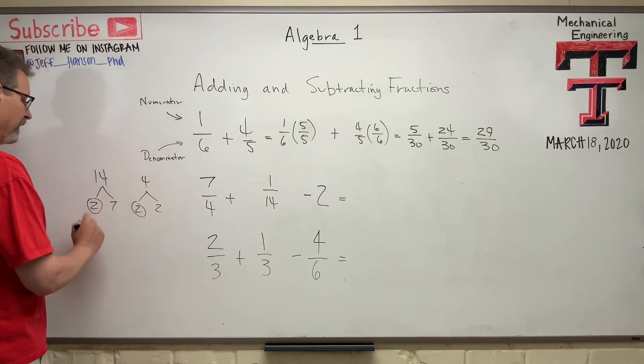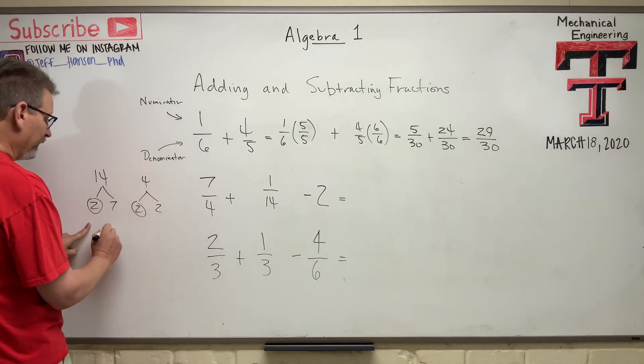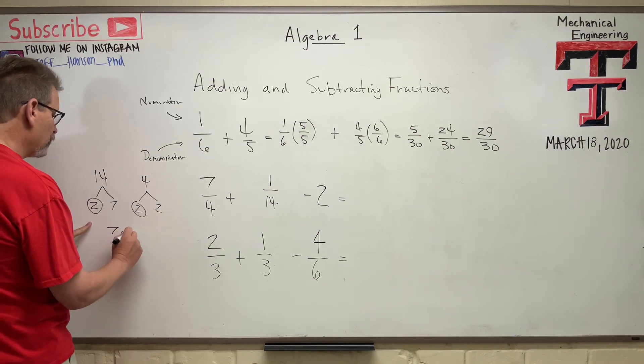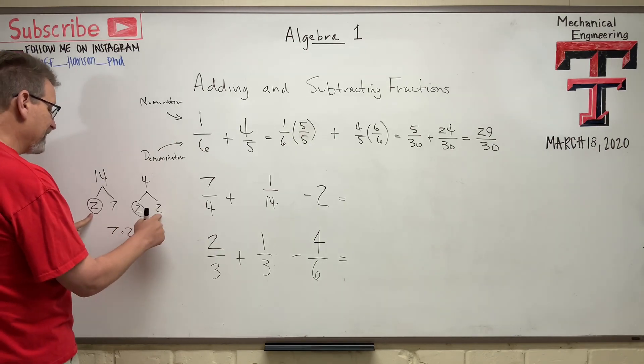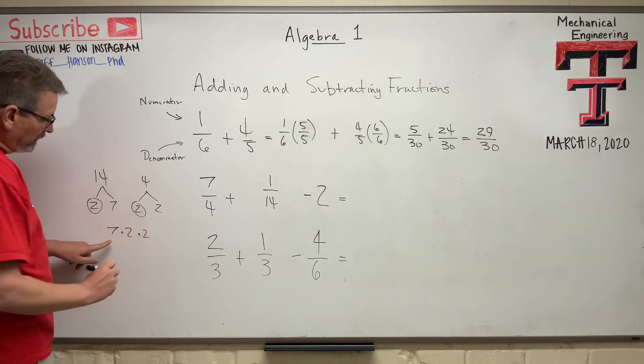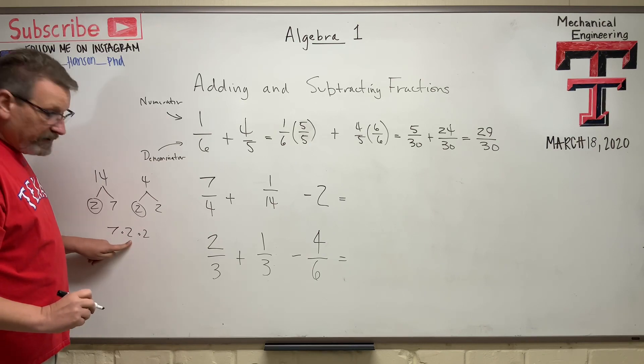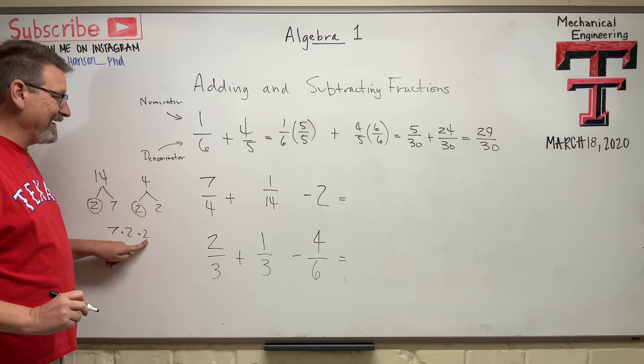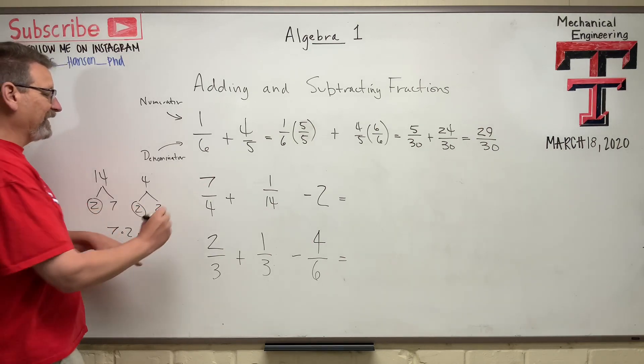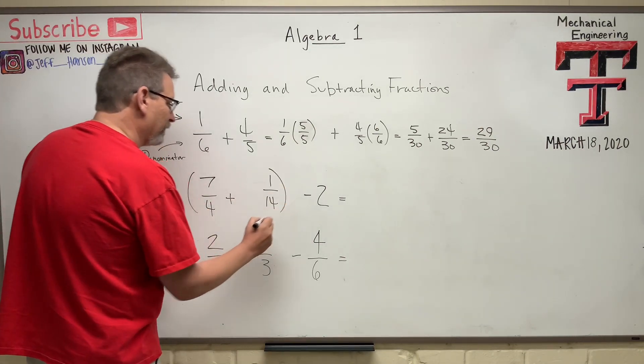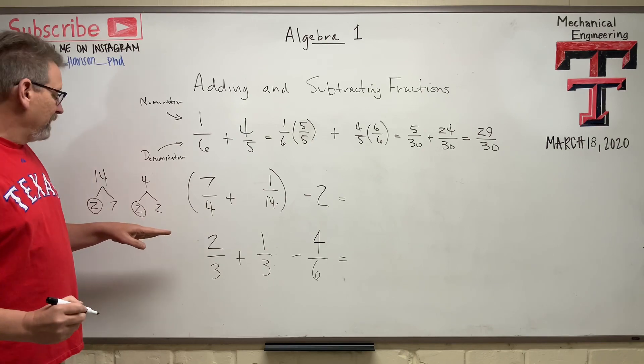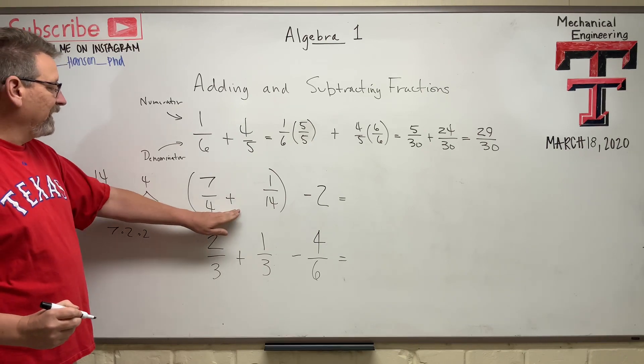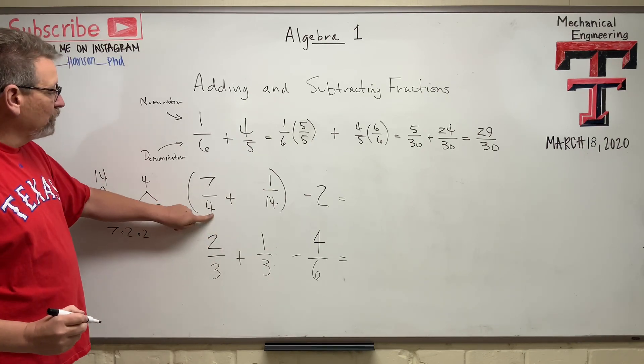So the least common multiple is 7 times 2, there's my 2, times that guy over there, one more 2. 7 times 2 is 14, times 2 more is 28. So the least common multiple to add these two guys together is 28. So again, let's do that.